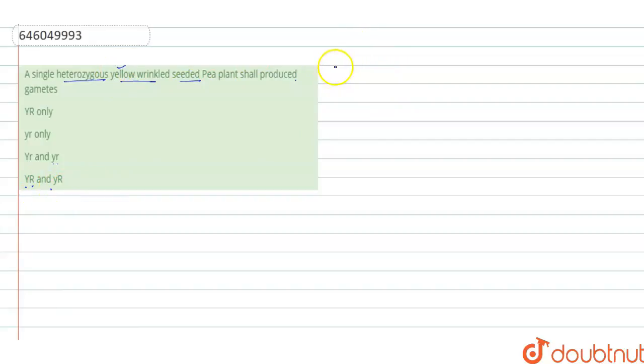The question is asking about the heterogeneous yellow wrinkled seeded pea plant. Here the word heterogeneous represents that the yellow color of the pea is heterogeneous, which means that it contains capital Y and small y. That's why it is heterogeneous.